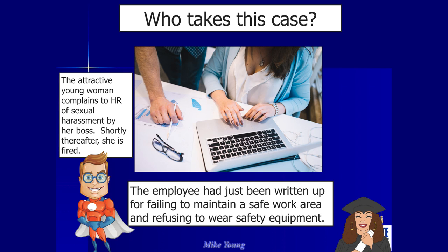Let's change the facts a little bit. Let's add a new fact: the employee had just been written up for failing to wear safety equipment in the work area. Now do you take the case? Most people say yeah, why not? She got written up — of course she did — that's pretext. The company had to write her up because they can't just fire her for complaining about sexual harassment. Everyone knows that's wrong, so they have to have a reason: oh, she didn't wear safety goggles, let's write her up. Most people take the new information and it fits your story, so System 2 doesn't get called in.